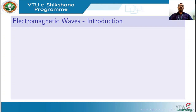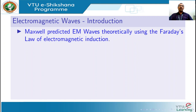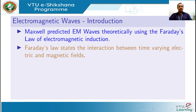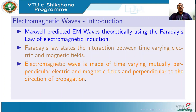What are electromagnetic waves? What is their origin? The concept of electromagnetic waves was theoretically put forward by James Clerk Maxwell based on Faraday's laws of electromagnetic induction. Faraday's law states that a time varying electric field generates a time varying magnetic field and vice versa. Based on Faraday's laws, Maxwell predicted the generation of electromagnetic waves, which consist of time varying electric and magnetic fields along mutually perpendicular directions.